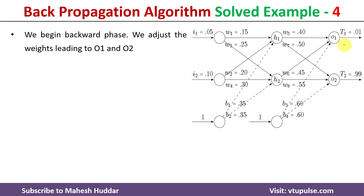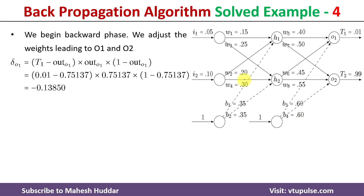The next step is to update the weights with respect to the output layer neurons — that is, w5, w6, w7, w8, b3, and b4. To do this, we first calculate the contribution of o1 and o2 to the overall error. Based on o1's contribution, we can update w5, w6, and b3; based on o2's contribution, we can update w7, w8, and b4.